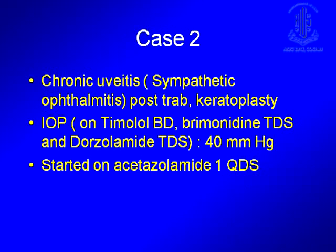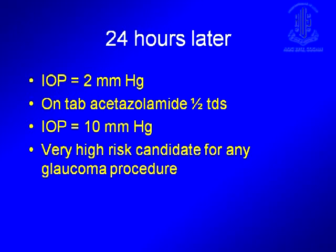The second case is a 30-year-old with chronic uveitis, sympathetic ophthalmia, prior lensectomy, and keratoplasty. His intraocular pressure on timolol, brimonidine, and dorzolamide was 40 mmHg. Starting acetazolamide four times a day brought the IOP to 2 mmHg 24 hours later. Stopping acetazolamide caused IOP to go to 35–40; restarting dropped it to zero or two. Reducing the dose to half a tablet three times a day gave an IOP of about 10 mmHg. So his ciliary body is in a very narrow zone of function. We have been following him for more than a year on all these medications, monitoring his blood reports, but we are left with no other options.